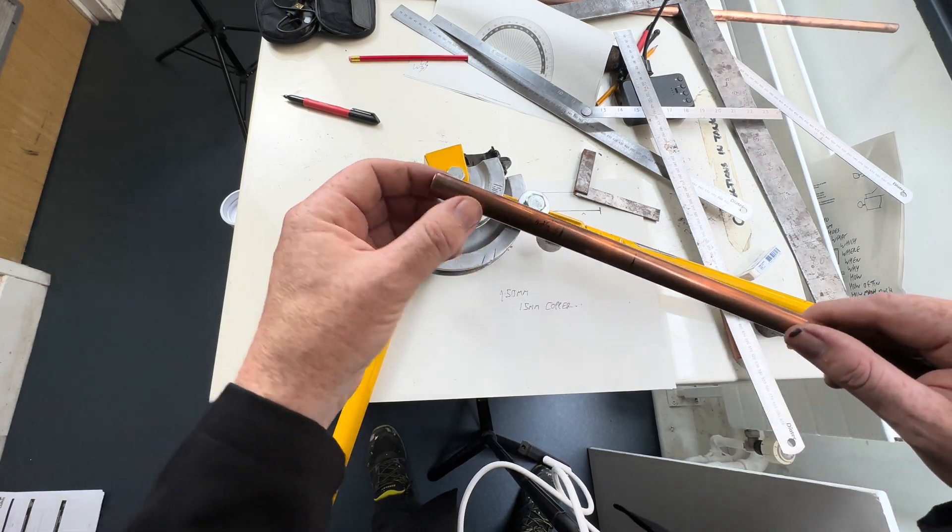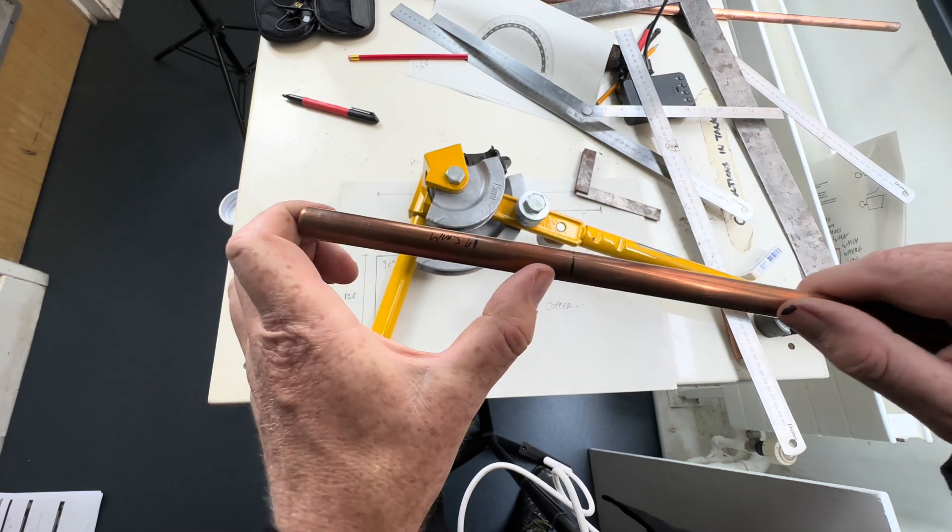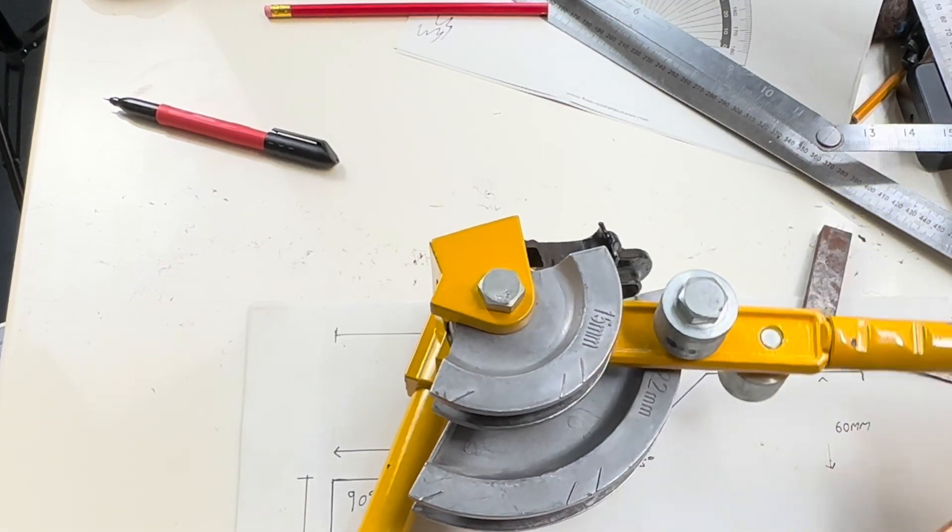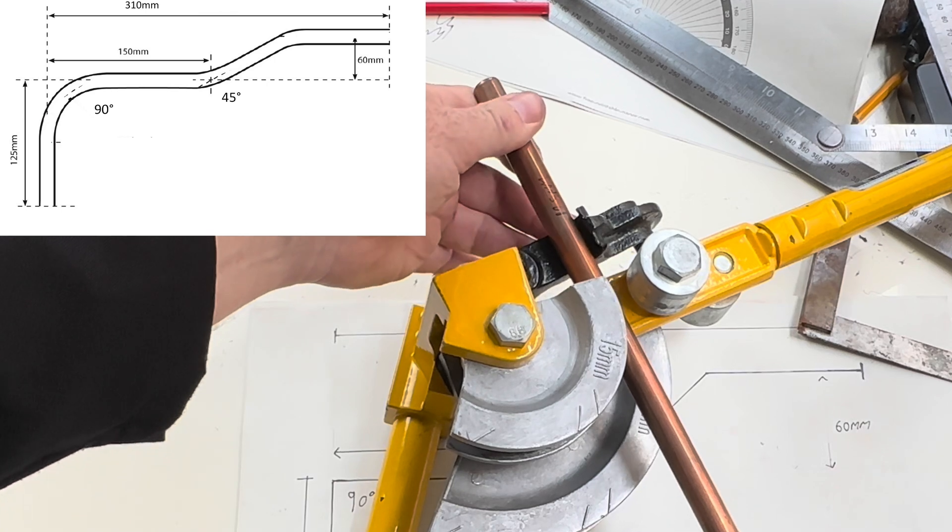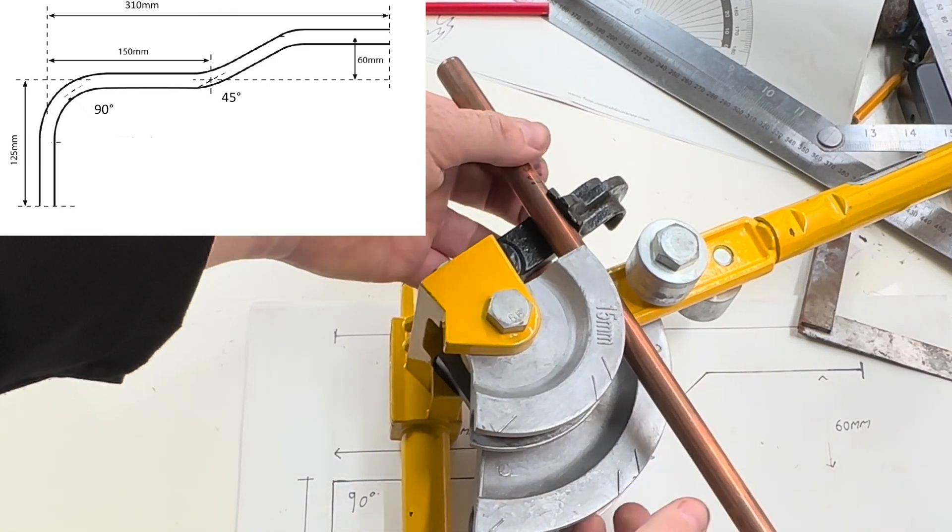Place our pipe into the pipe bender where the end we've marked goes on the end where the stop is. So 125mm mark goes the side where the stop goes like so.